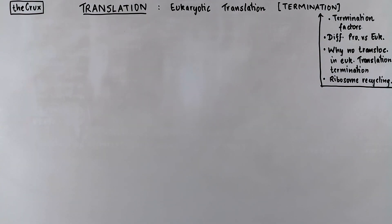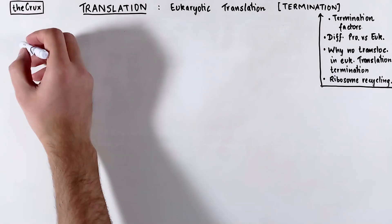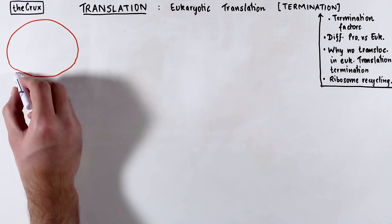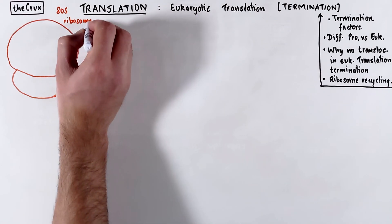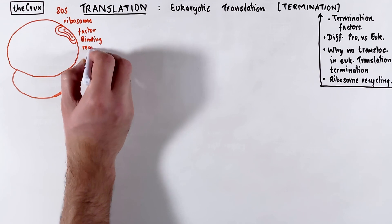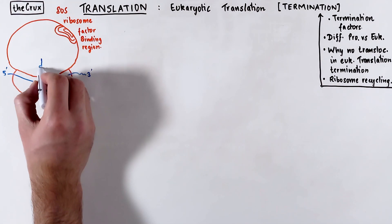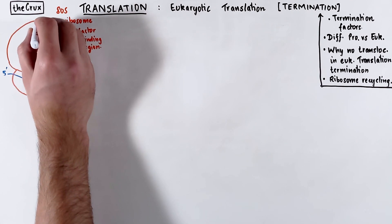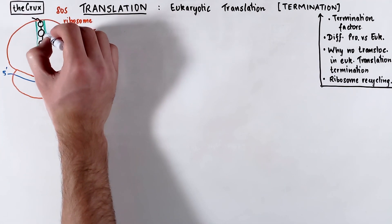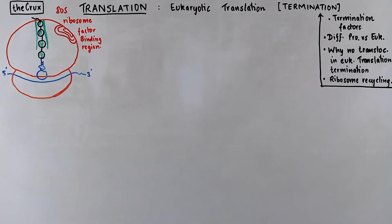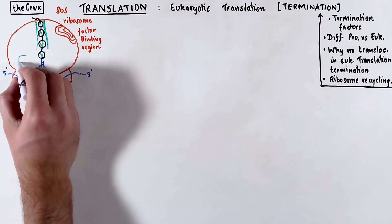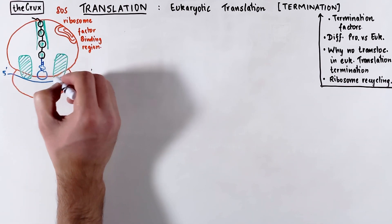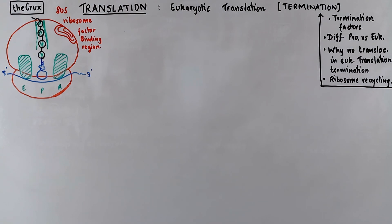The link to the prokaryotic termination video is down in the description if you need a refresher, and hopefully you understand prokaryotic translation because it'll make this video very easy to understand. So we begin where we left off in the elongation, where the ATS ribosome complex has the tRNA attached at the P site. This tRNA is attached to the polypeptide chain which is protruding into the protein exit channel. In this ATS ribosome complex, the E site and the A site are both empty or unoccupied.